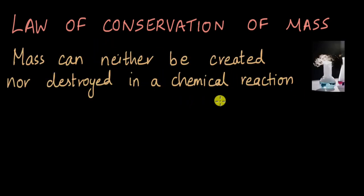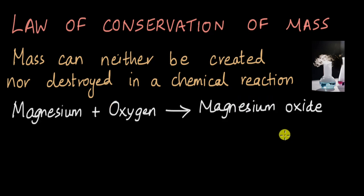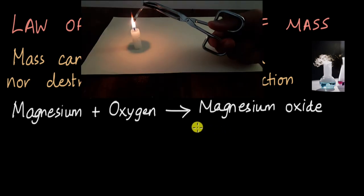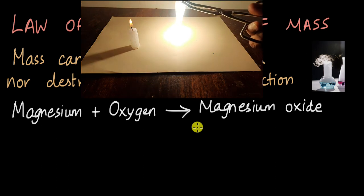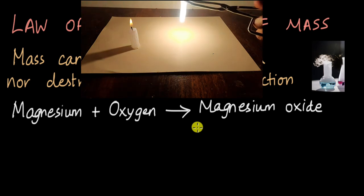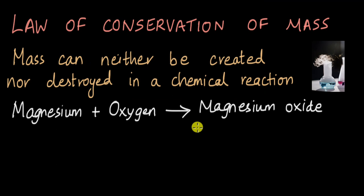For example, if we take magnesium and heat it so that it starts burning, which will look kind of like this. Look at how it burns with a really bright flame. Now the reaction involved here is magnesium plus oxygen, which forms magnesium oxide, and it also releases light and heat energy.